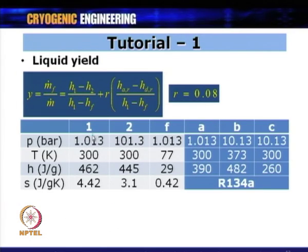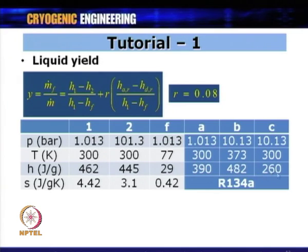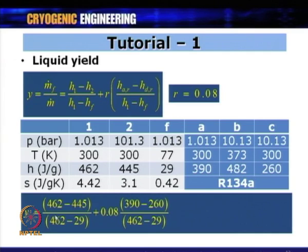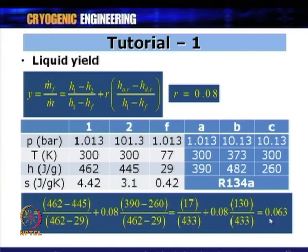The liquid yield for the pre-cooled Linde-Hampson cycle: y = (H1 − H2)/(H1 − HF) + r·(H_A − H_D)/(H1 − HF). With r = 0.08, H_A = 390, H_D = H_C = 260 J/g, H1 = 462, HF = 29 J/g: y = 0.04 + 0.08·(390 − 260)/(462 − 29) = 0.04 + 0.023 = 0.063.